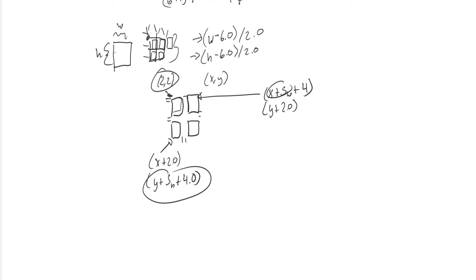That about wraps it up for this episode. We went over drawing the snake and the data structure we'll be using. In the next episode we'll see clearly how that data structure helps us with movement — moving the snake and implementing that jittery trailing movement. If you liked this, please hit like and subscribe, and I'll see you next time.